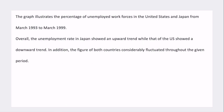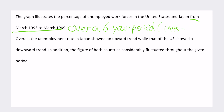The candidate wrote: 'The graph illustrates the percentage of unemployed workforces in the United States and Japan from March 1993 to March 1994.' This could be paraphrased more — for example, 'over a six-year period (1993 to 1999).' A better phrasing would also be 'the percentage of the workforce who are unemployed' rather than 'unemployed workforces.'